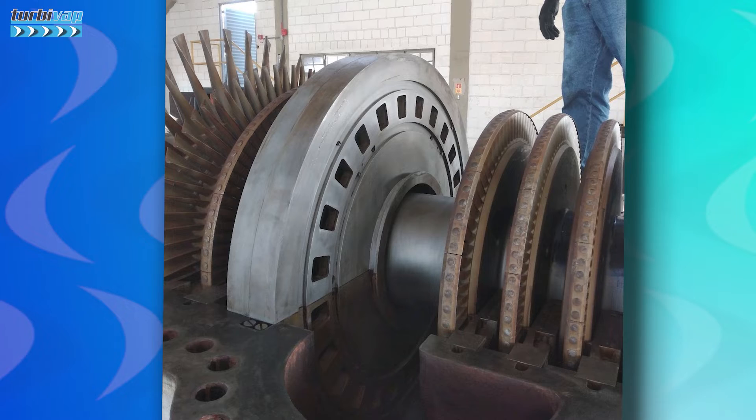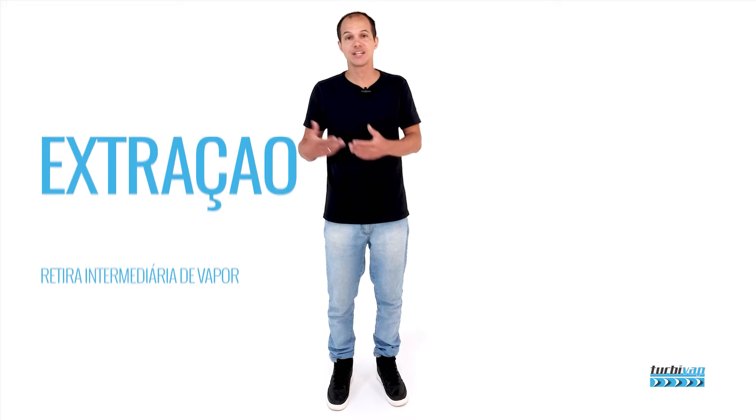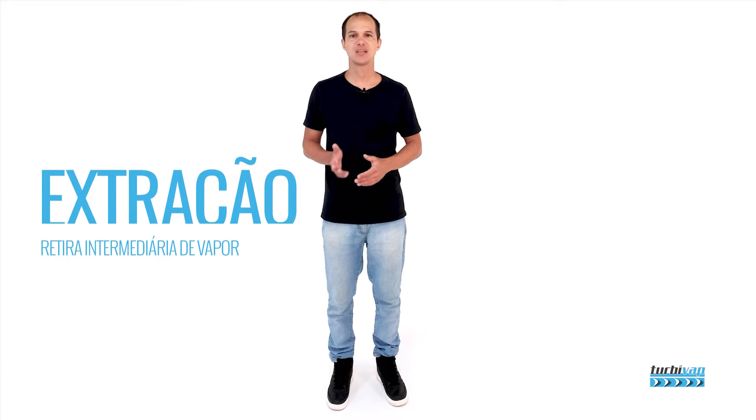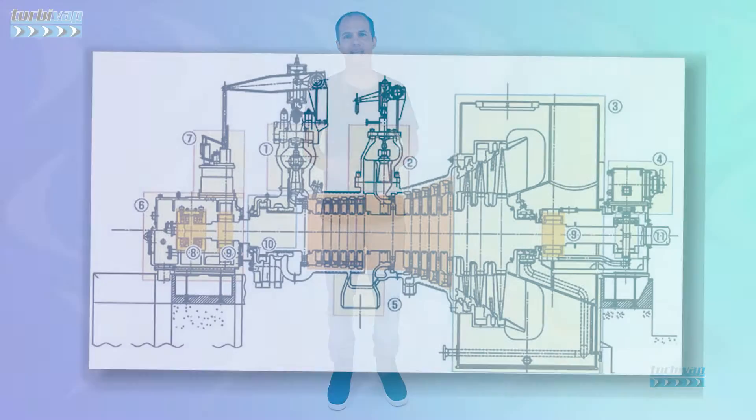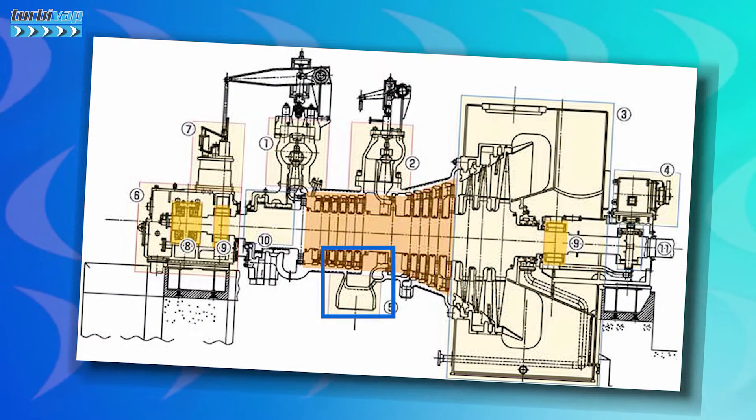Turbines can also be classified as with or without steam extraction. Extraction is nothing more than removing steam from within the turbine after passing through some stages. The steam enters the turbine with high potential energy, and after passing through some stages, part of this vapor leaves through extraction and goes to the process. The part that remains in the turbine expands until it exits through the turbine exhaust.